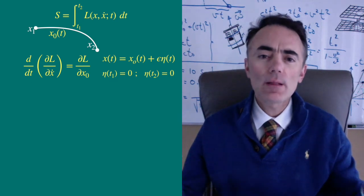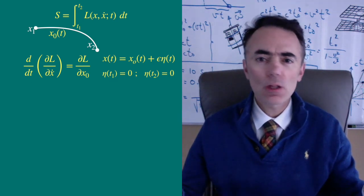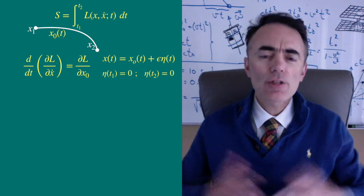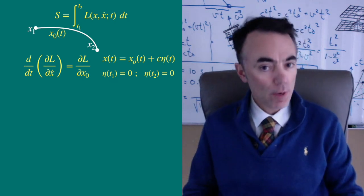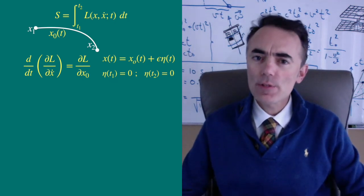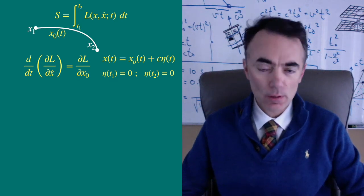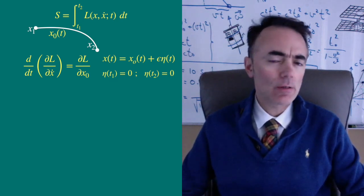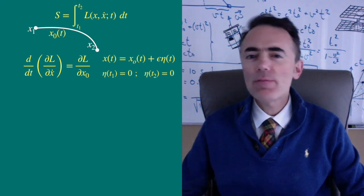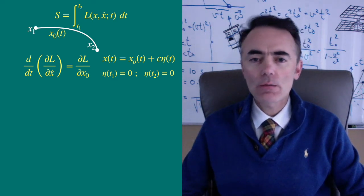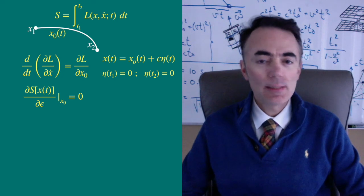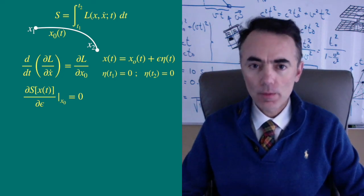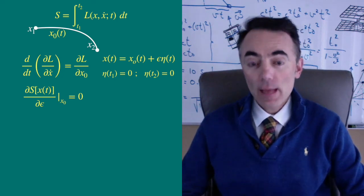So we have written the action for any function close to x0. Action for x0 is an extreme. Action for x of t depends on the parameter epsilon. But for x0, to make the action an extreme, the derivative of the action with respect to epsilon should be 0 for x0, as this one makes S an extreme.